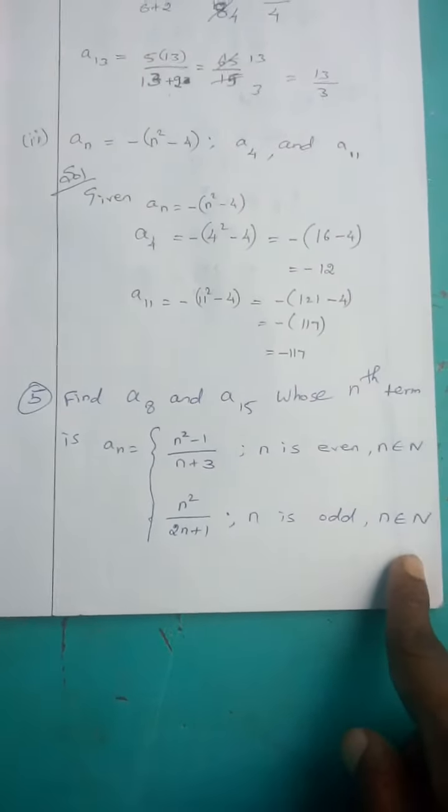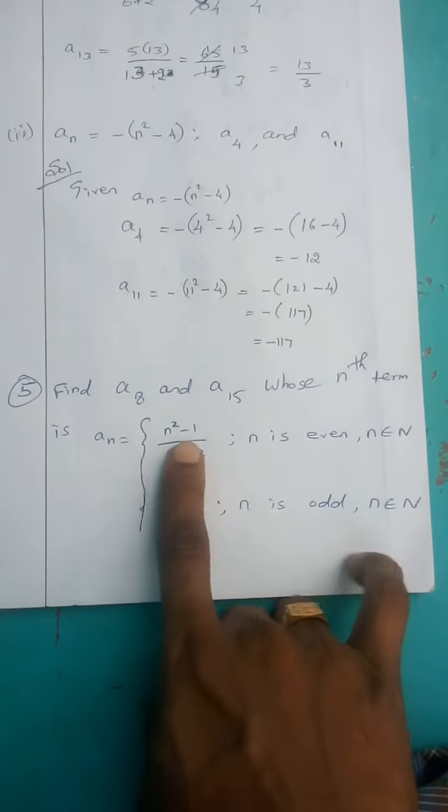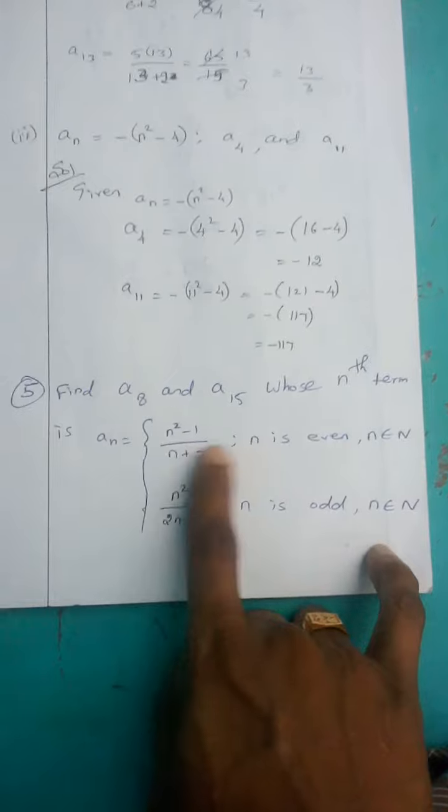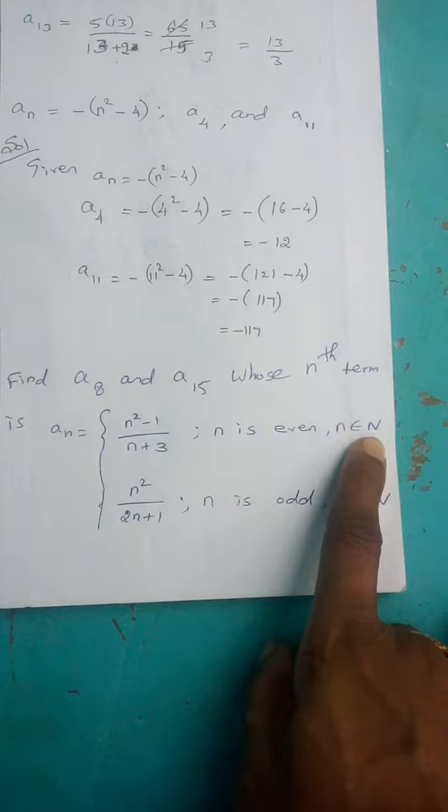Find A8 and A15, where the nth term AN equals n squared minus 1 divided by n plus 3, when n is even, n belongs to N.